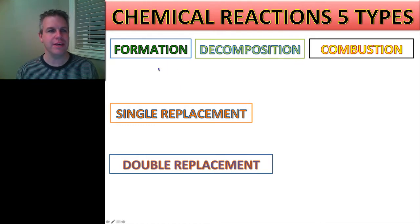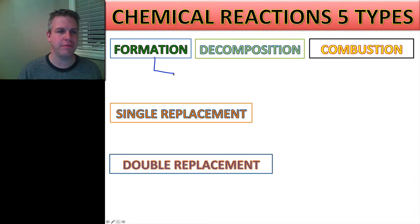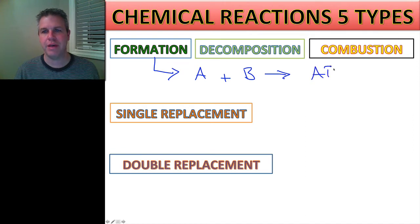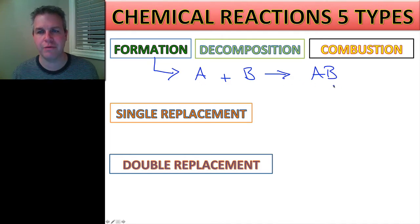So the first one being a formation reaction. This is when we have two elements, let's say we just have A plus B that is going to yield AB. So they're coming together to form - two things are going to come together to form one.